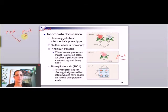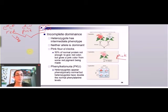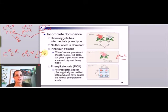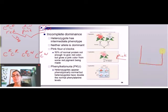A plant with two red alleles will be red. A plant that is heterozygous — one red and one white — will be pink. Only a plant with two white alleles will be white. You'll also notice a superscript notation is used here: C-R C-R, C-R C-W, and C-W C-W. That notation indicates incomplete dominance. You can also do Punnett squares just like before.